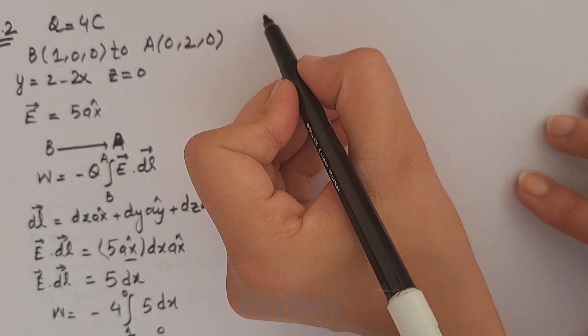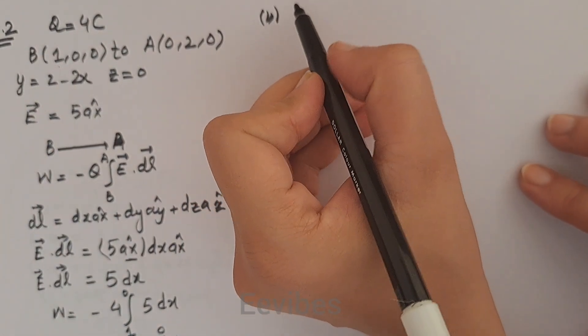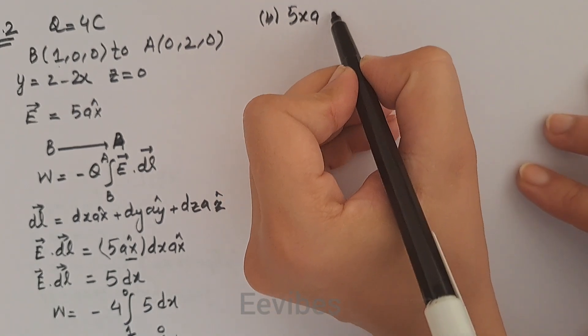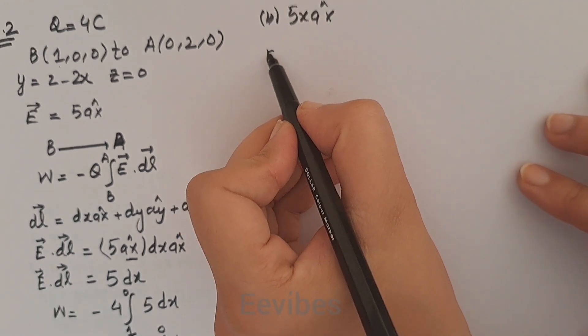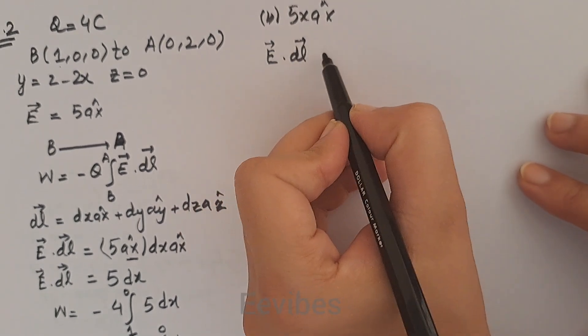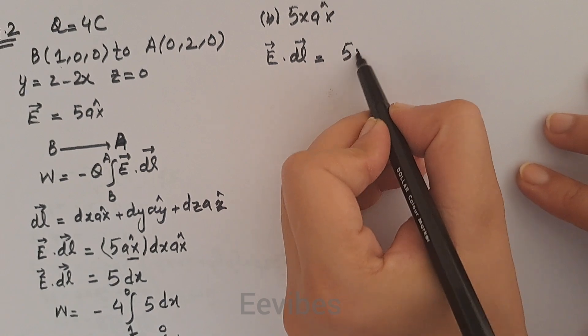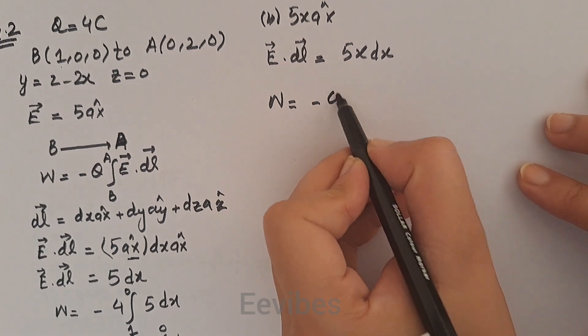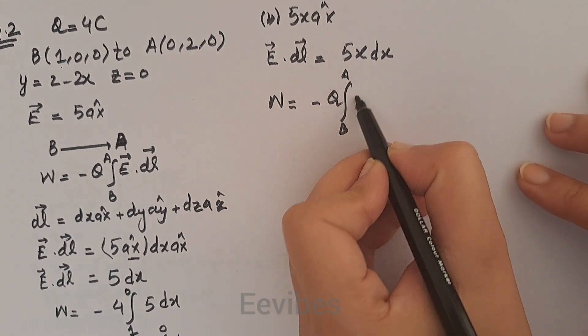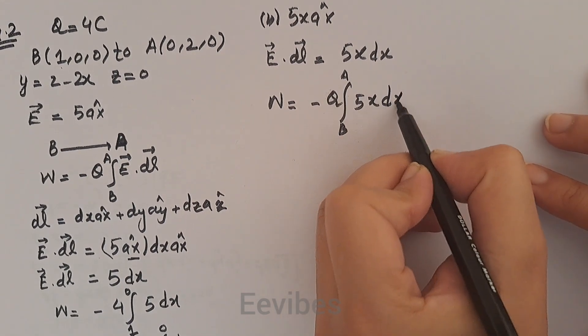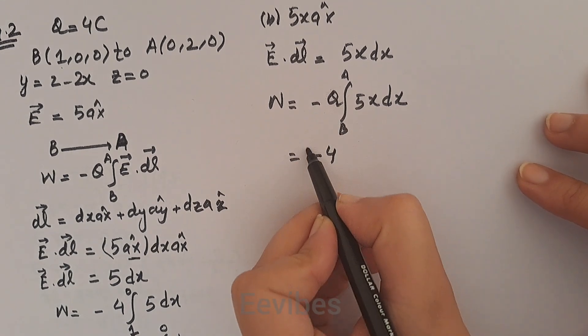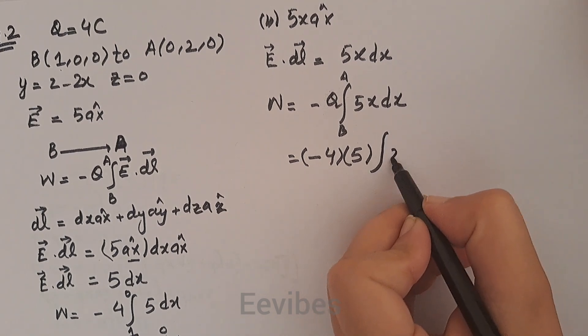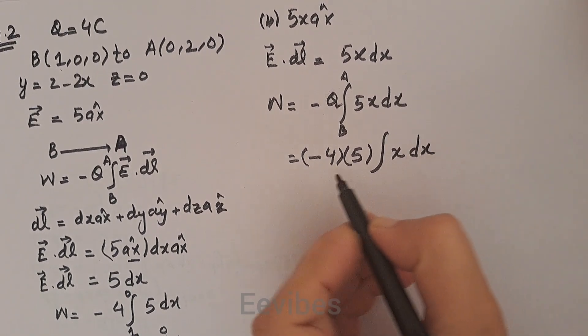In part B, the electric field intensity is given as 5x ax̂. Again, we will determine E·dl, so this results in 5x dx. Now the work done is equal to -Q ∫(B to A) 5x dx. The charge is equal to 4 coulombs. -5 is taken out from the integral, and inside the integral we have x dx.